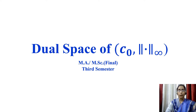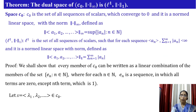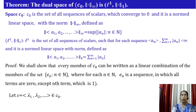Earlier we proved that the space C₀ with the infinity norm is a normed linear space and also a Banach space. Today we will find the dual space of this space. The theorem states that the dual space of C₀ with the infinity norm is the space L¹ with the 1-norm.